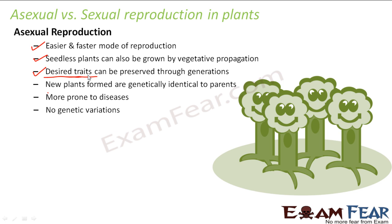New plants formed are genetically identical to the parents, which has both advantages and disadvantages. The disadvantage is that it does not involve any variations. Such plants are more prone to diseases because if there is any disease or issue with a parent plant, since the same thing is getting replicated through asexual reproduction, the chances of disease passing to all next generations is very high.